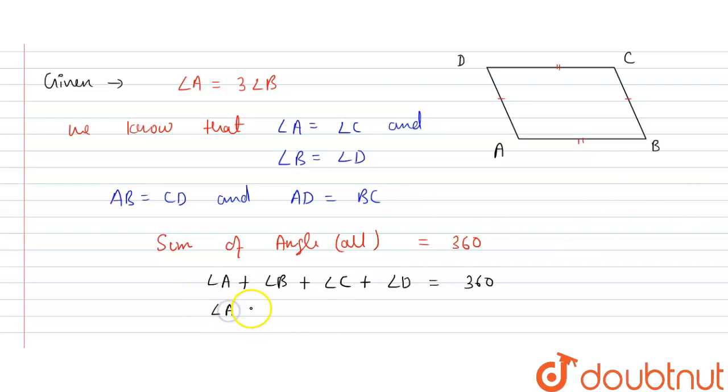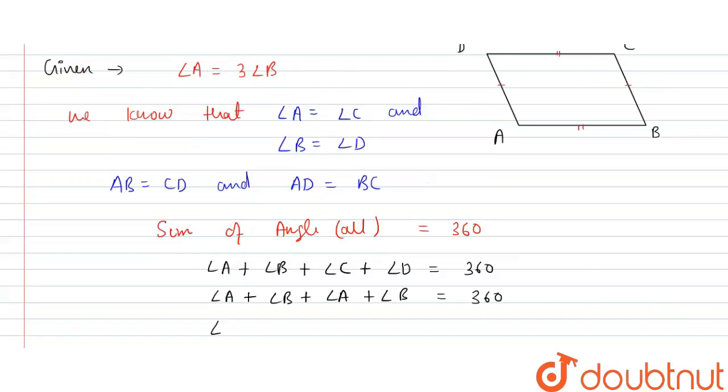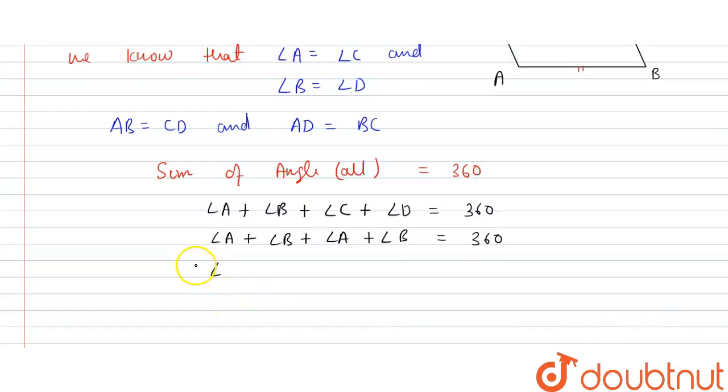So we are writing this thing: angle A plus angle B plus angle C plus angle D. What is the value of angle C? Angle C we write as angle A, and angle D we can write as angle B. So this value is equal to 360. And then we put angle A is equal to three times angle B. So this is 3 angle B plus angle B plus 3 angle B plus angle B, which equals 360.